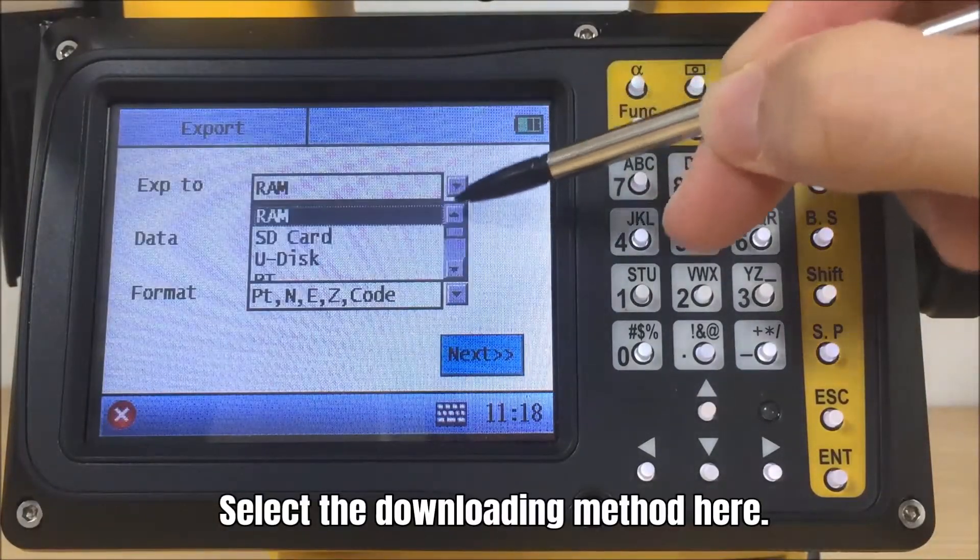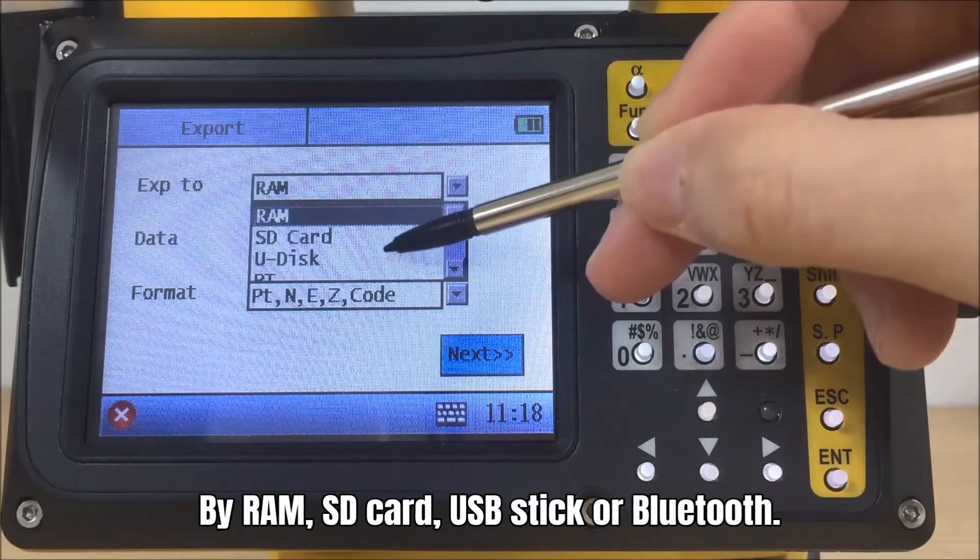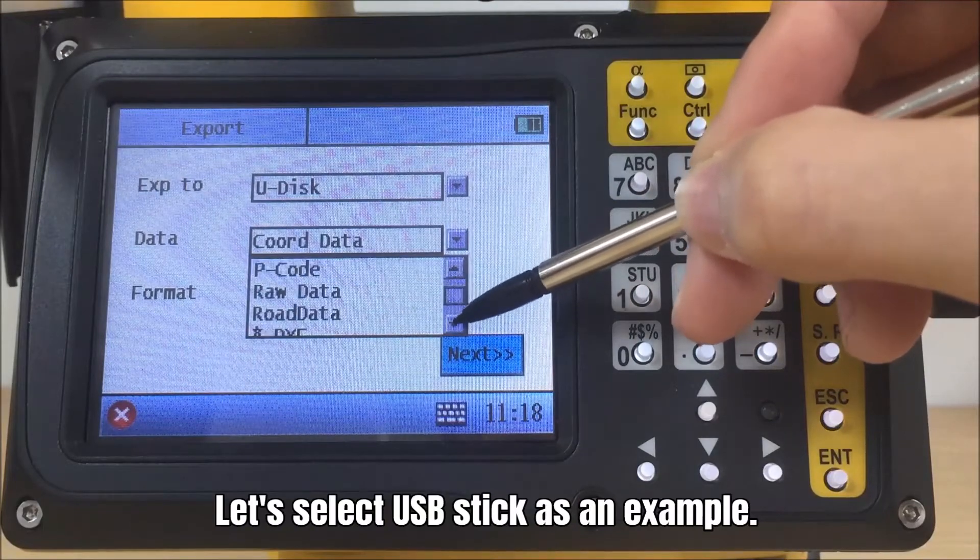Select the downloading method here. By RAM, SD card, USB stick, or Bluetooth. Let's select USB stick as an example.